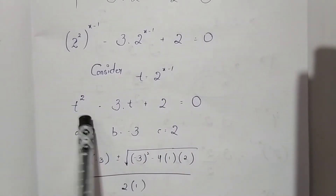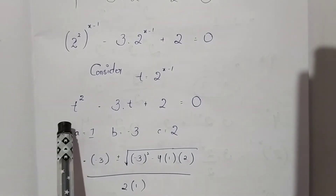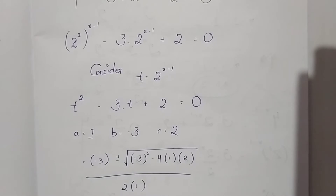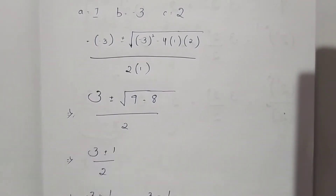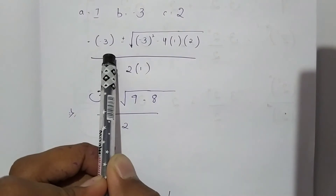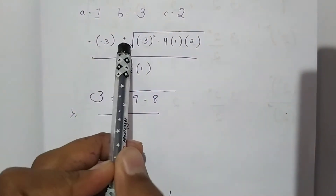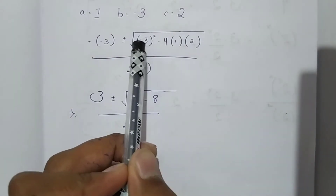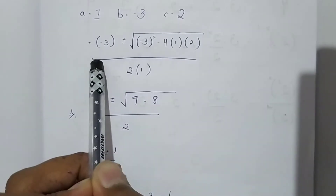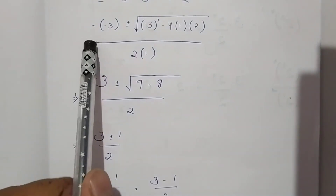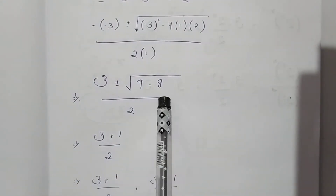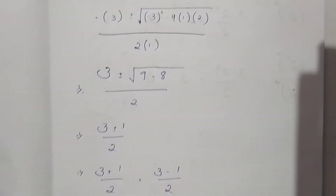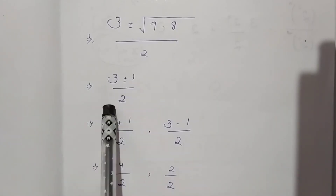We need to find the roots of this quadratic equation to get the values of t. It is in the form ax² + bx + c, where a is 1, b is minus 3, and c is 2. Using the quadratic formula: minus b plus or minus under root of b squared minus 4ac, divided by 2a. Substituting: 3 plus or minus under root of 9 minus 8, divided by 2.